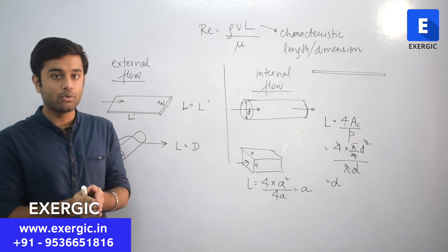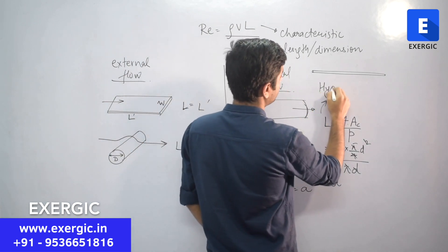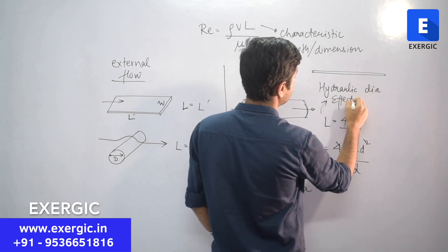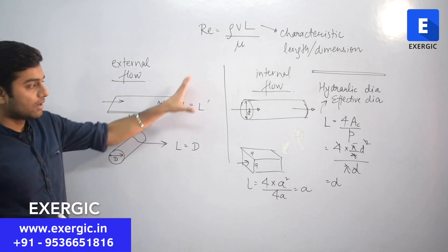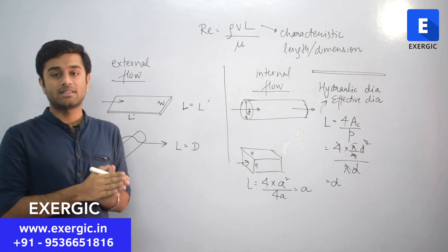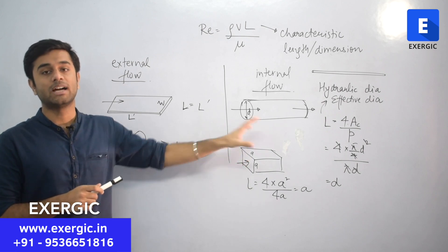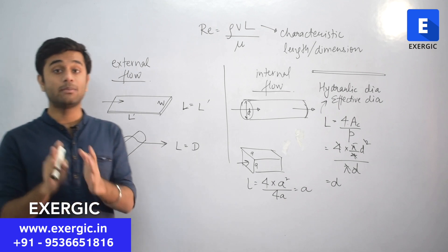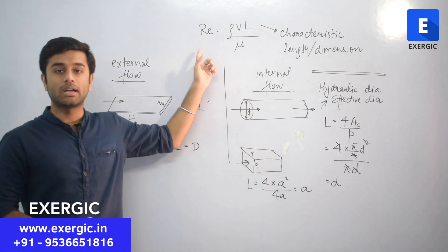So, whenever you have internal flow, use this expression. This is also called as hydraulic diameter or effective diameter. So for internal flow, apply that. For external flow, keep this concept in mind. So, this is not something which is clearly mentioned in most of the sources. They will just tell you that for this case, this is the characteristic length. For that case, that is the characteristic length. But if you have this clear distinction in your mind, then you won't face any problem. But keep in mind that this explanation of characteristic length which I am giving you is for Reynolds number.